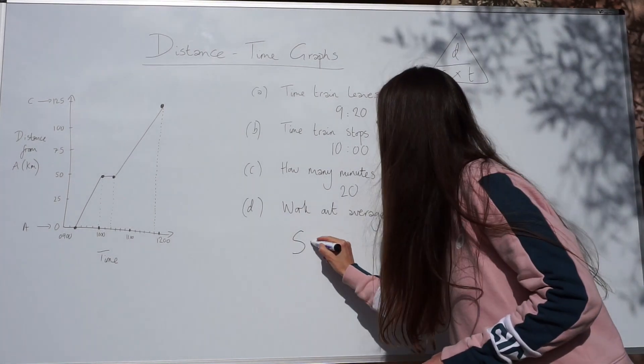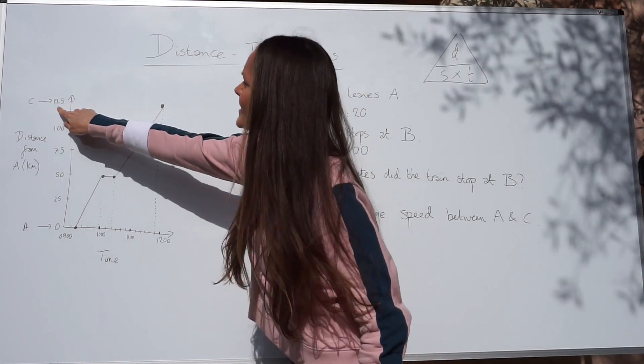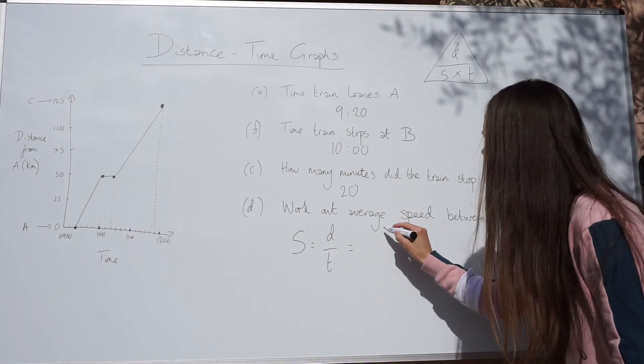So the total distance is easy. It's labelled on the graph. It's here. C is at 125 kilometres from A. So we've got the distance.